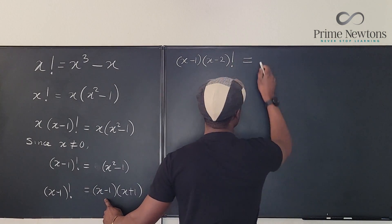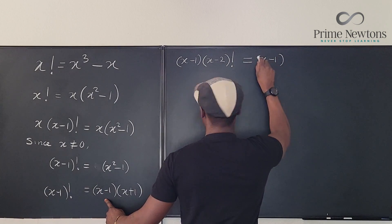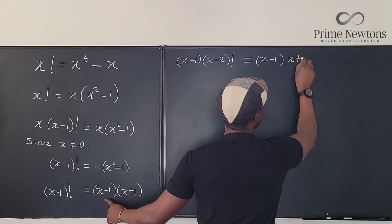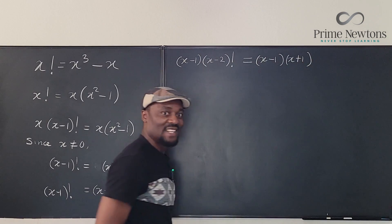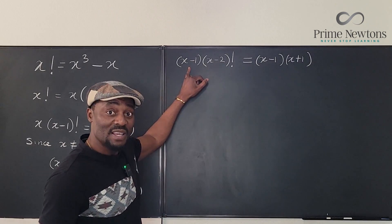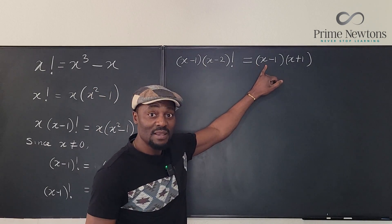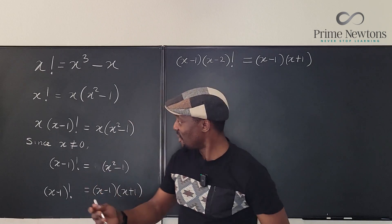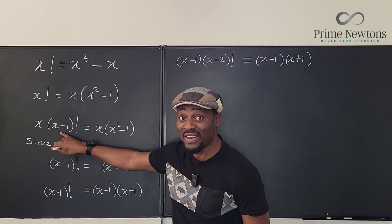And this is going to be equal to x minus 1 times x plus 1. Nice. So as you can see, x minus 1 is here. x minus 1 is here. The same idea that we employed here is what we're going to think about again.